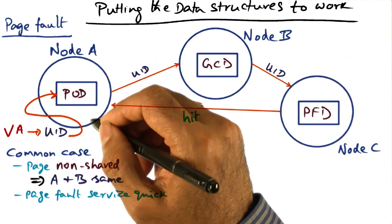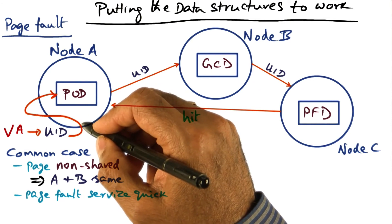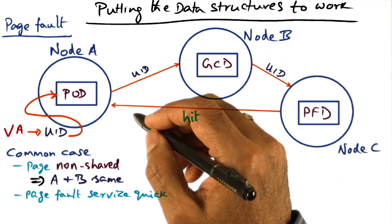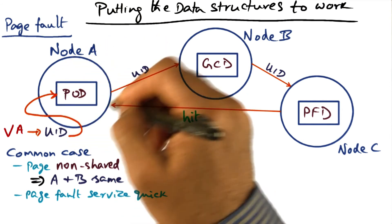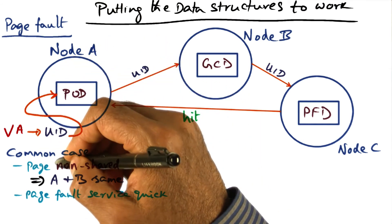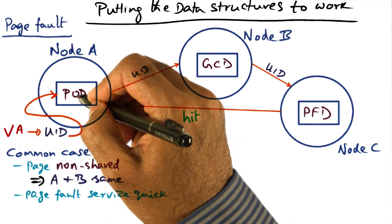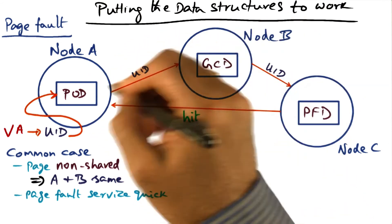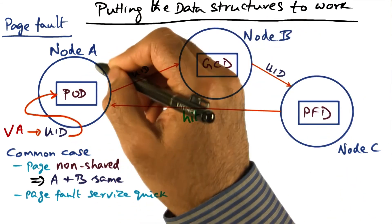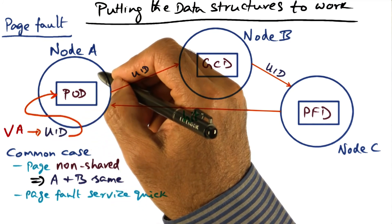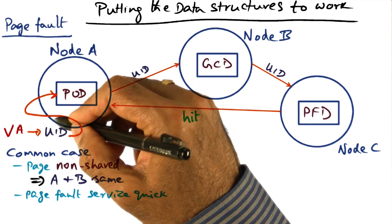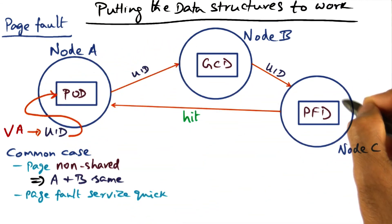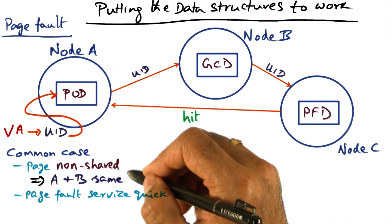The important message to take away is that even though these distributed data structures may look like they require a lot of network communication, it happens only when there is a page fault. And since most page faults involve non-shared pages, the POD and GCD are probably co-resident on the same node. So even though I've shown two different nodes, A and B may be exactly the same node, meaning looking up the PFD is local, and we can directly go to the node containing the PFD and make the page fault service pretty quick.